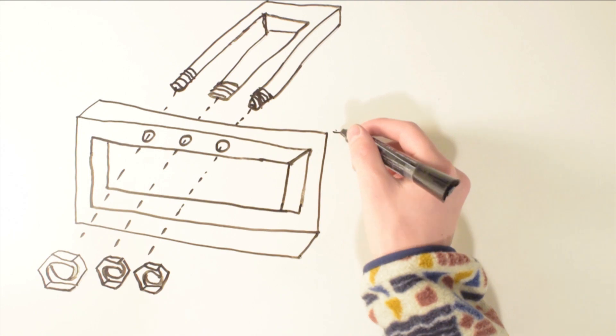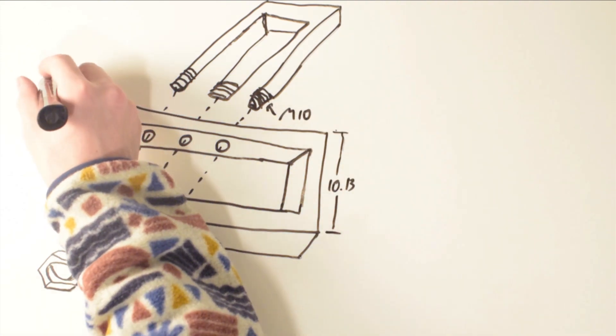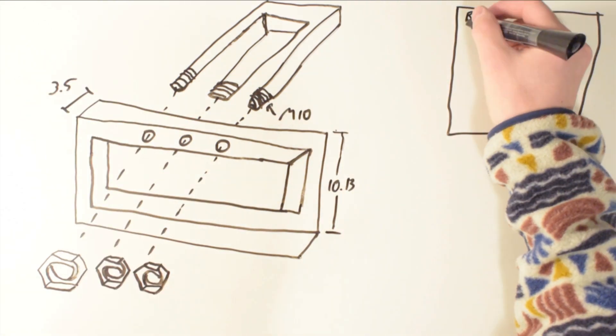So most engineering drawings should have five main things: a title block, a revision table, a BOM, general notes, and views of the part or assembly.